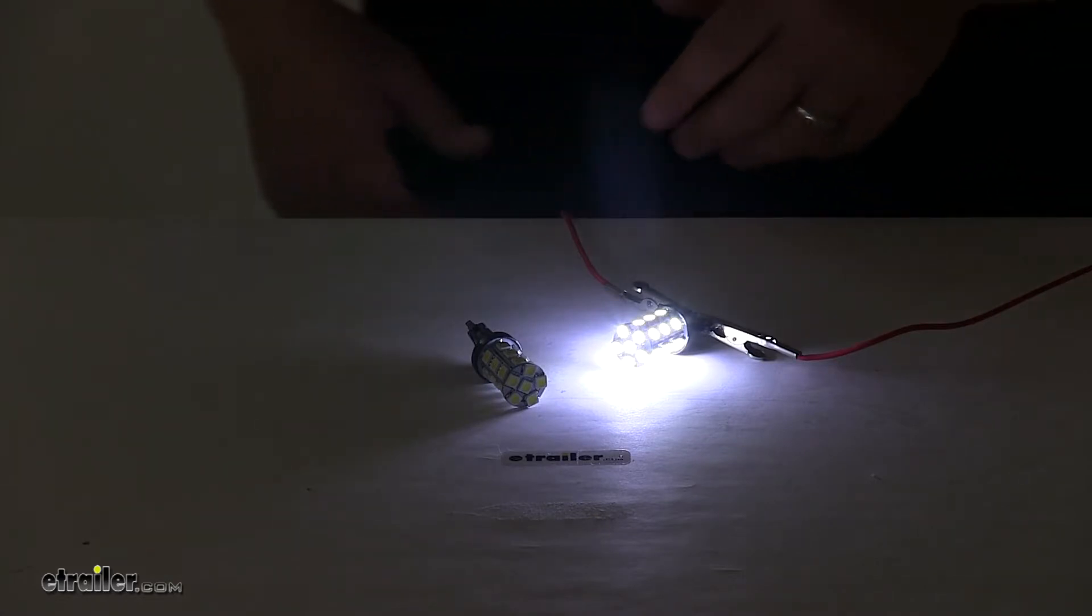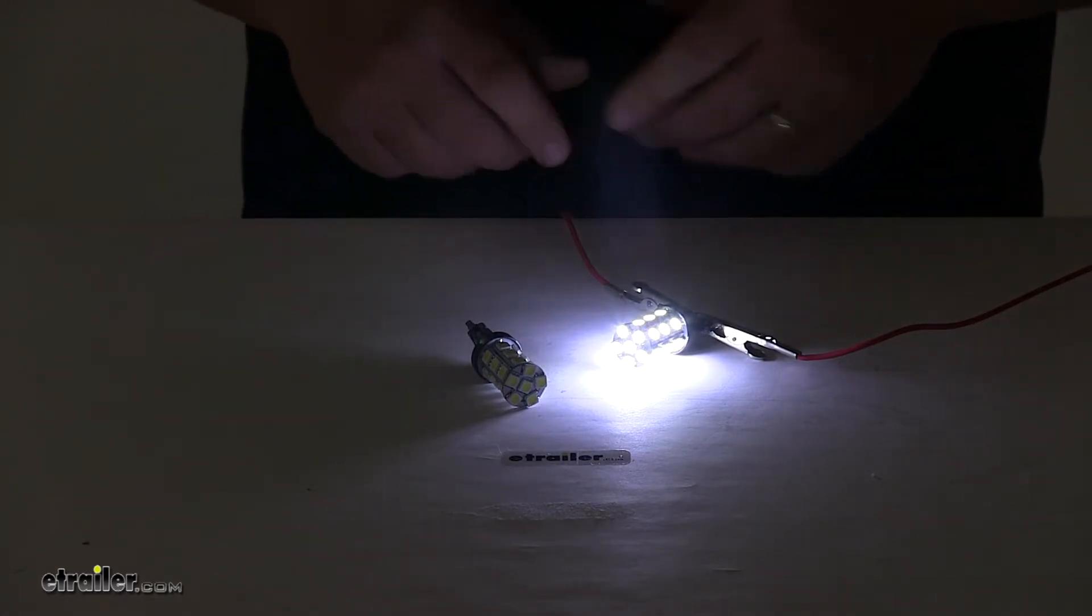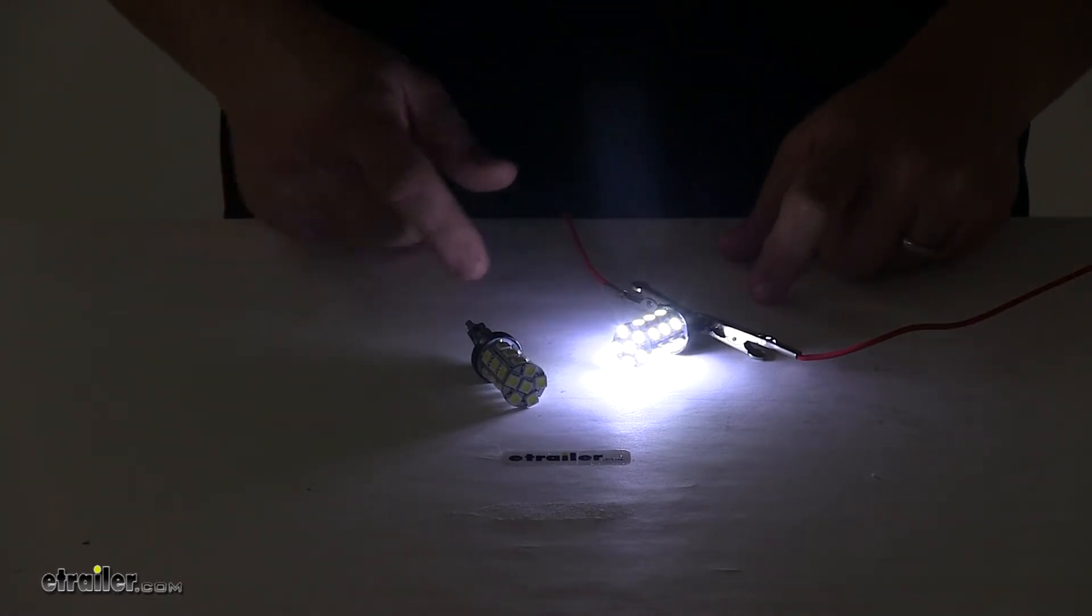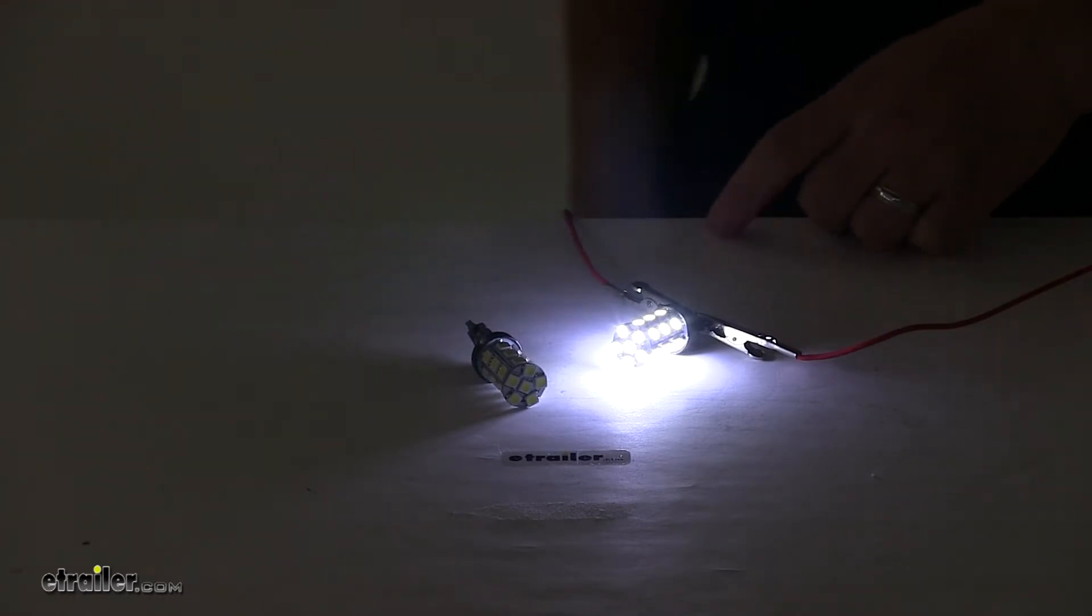When it comes to the light output, we're looking at 380 lumens per bulb. When combined, that's 760. Operating voltage is 9 volt to 16 volt DC, and the power draw at 14.3 volts is 0.2 amps or 2.86 watts. This is designed to work with 12 volt systems.